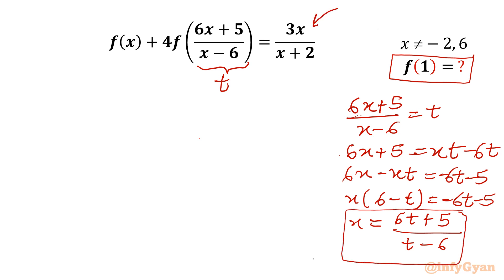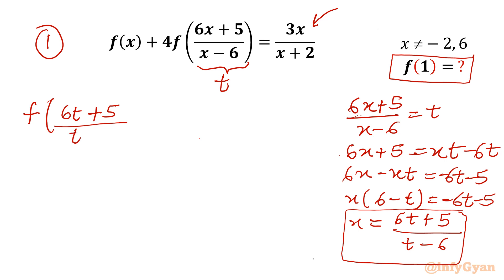Let me call the given equation Equation 1. Now I will substitute x = (6t+5)/(t-6) into it. The left-hand side gives f((6t+5)/(t-6)) + 4·f(t), and the right-hand side is 3x/(x+2) which we need to simplify using x = (6t+5)/(t-6).